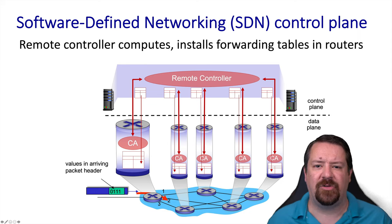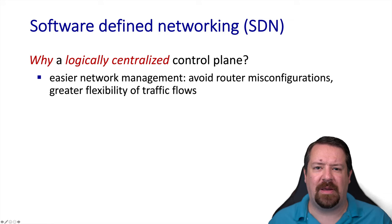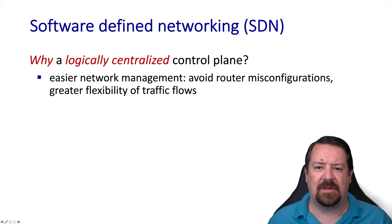Having looked at the traditional router control plane architecture in previous videos, we'll now dive into the SDN architecture in more detail. First, we'll look at the motivation for why we would want to make this shift away from what has worked for the internet for so long. One of the primary motivators is to make network management easier — not out of laziness, but primarily to avoid misconfiguration. Surveys of network operators indicate that misconfiguration is the number one cause of network outages across the internet, so decreasing the likelihood of misconfigurations can go a long way to increasing reliability.